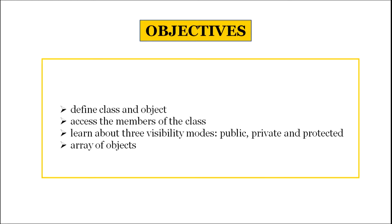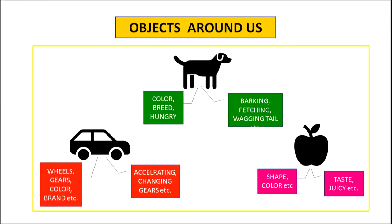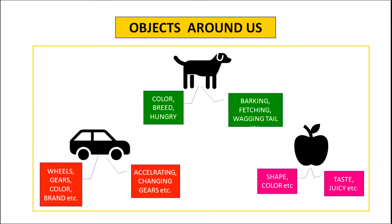And array of objects. We are surrounded by different kinds of objects. For example, if you simply look around your cell, you will find objects like table, chair, pen, car, fan, phone, etc. All these objects have certain attributes and behavior, where attributes are the characteristics of the object and behaviors are the functions which the object can perform. For example, the attributes of a dog can be color, breed, hungry, etc., and its behavior can be barking, fetching, wagging tail, etc.